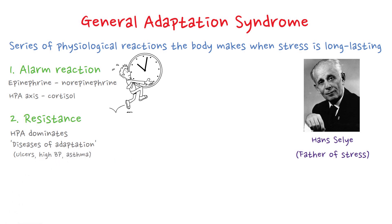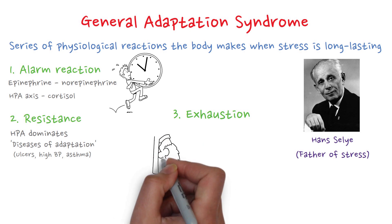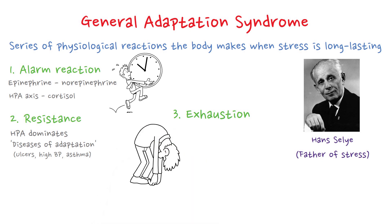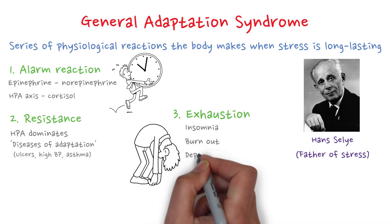The final stage of GAS is the stage of exhaustion. In this stage, the prolonged physiological arousal produced by long-term stress has depleted the body's energy. The immune system is weak and there is limited resistance. When stress continues in this stage, there will be damage to internal organs and even death can occur. This is the stage that presents with insomnia, burnout, or depression.